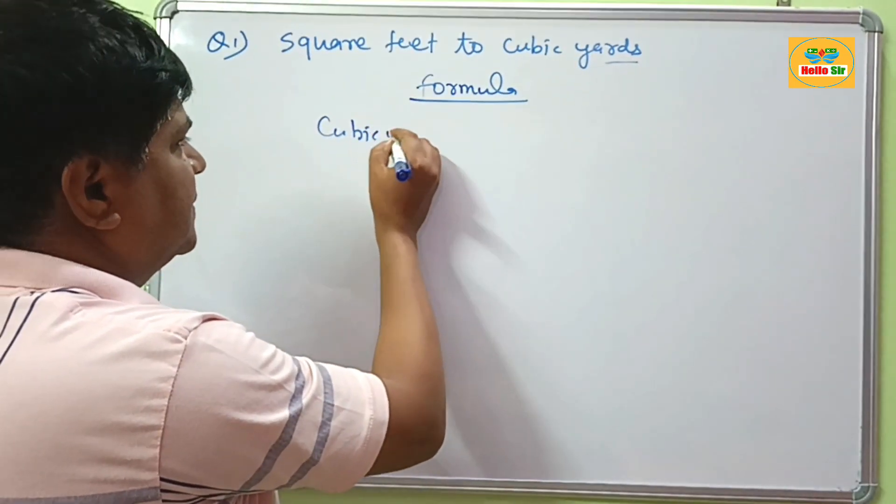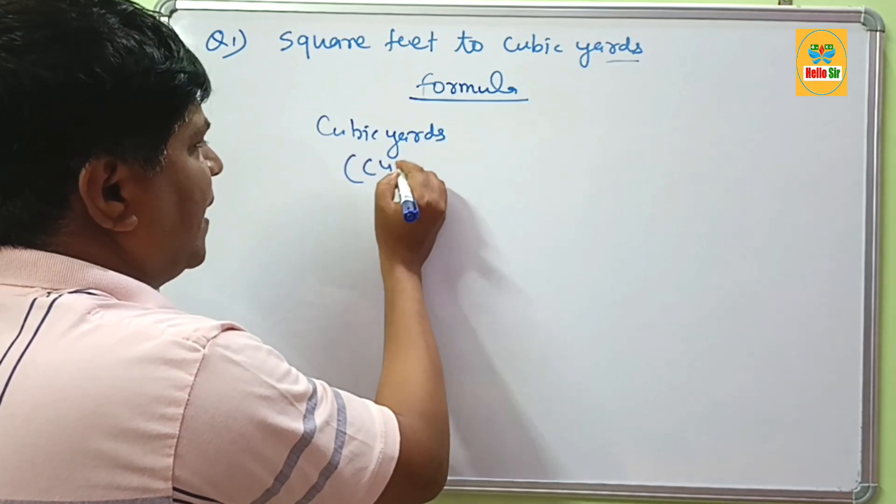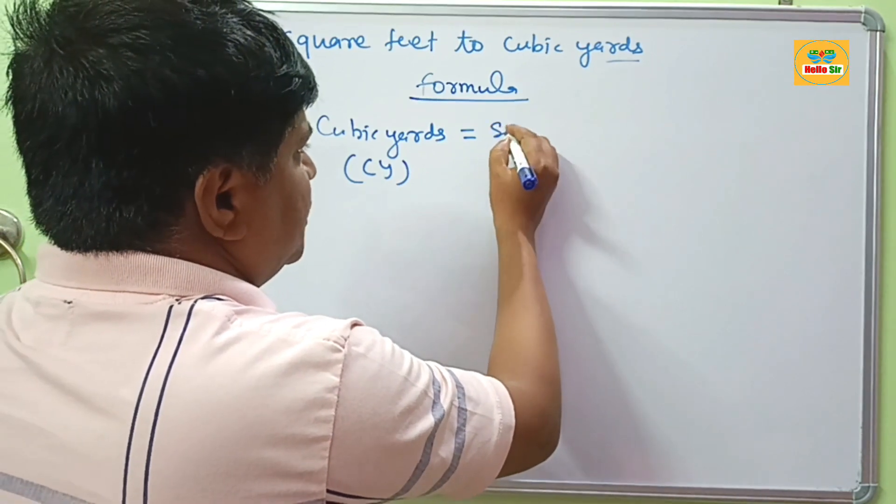Cubic yards, in short CY, is equal to the square footage of your project.